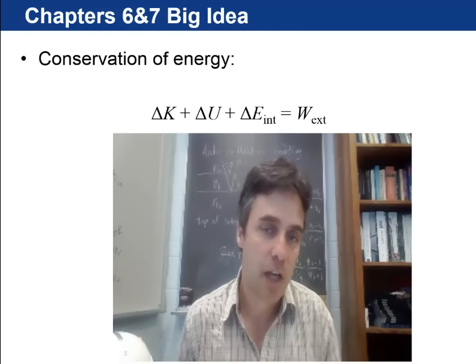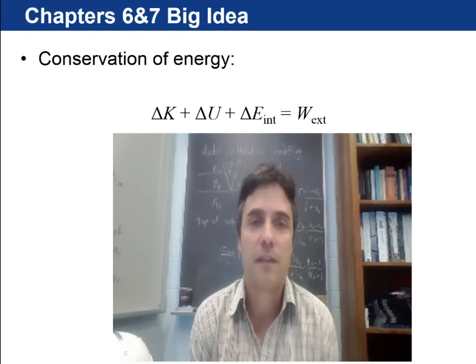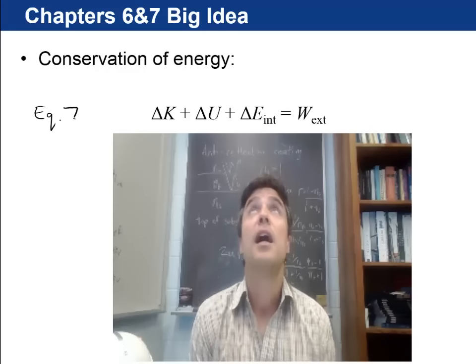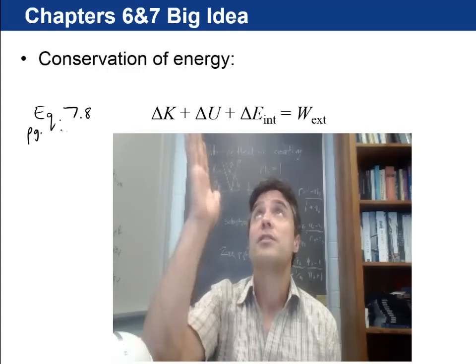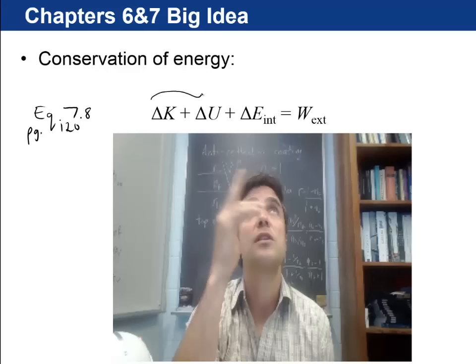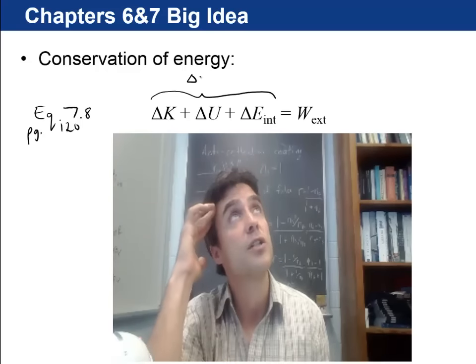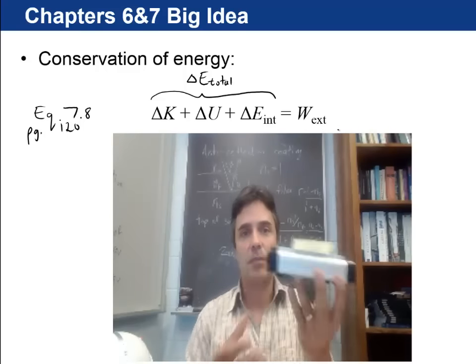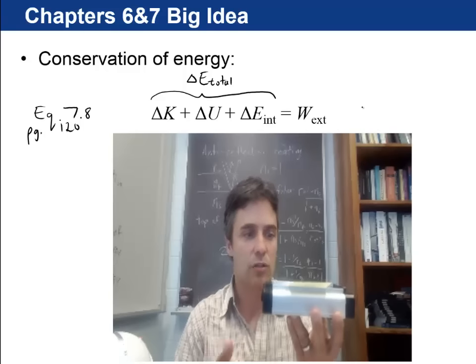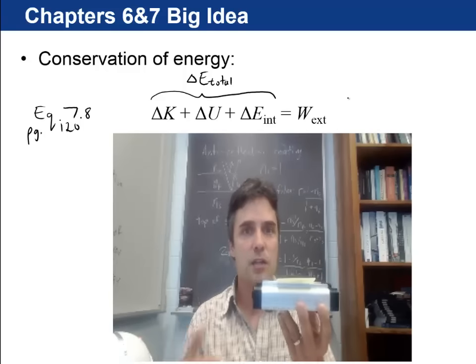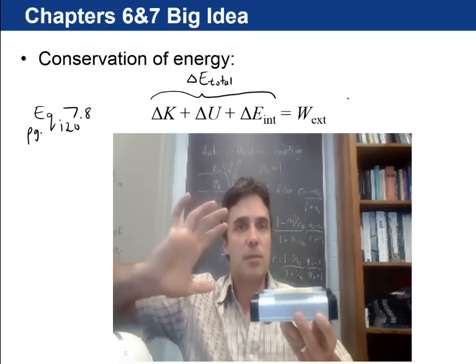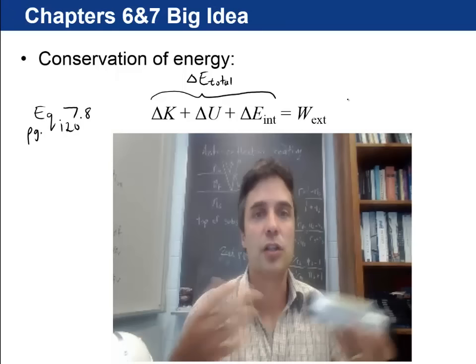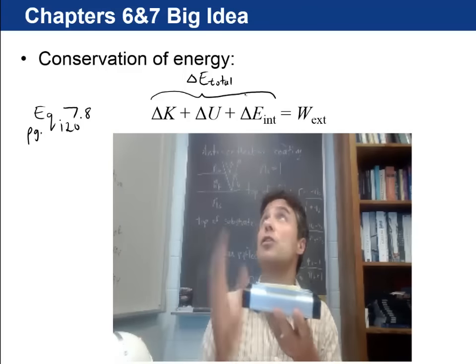The big idea of chapters 6 and 7 is pretty much in this equation above. It's equation 7.8 from your text on page 120. It's saying, the left-hand side of the equation is the change in the total energy of the system. The right-hand side of the equation is the external work, the work done by external forces. So what you're doing is you're defining a system, maybe it's this cart including the gravitational interaction. You can change the energy of the system if somebody from the outside, like my hand or something, pushes the cart, for example. That will change the total energy.